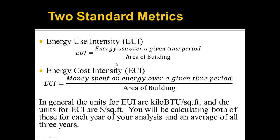The energy use intensity (EUI) can have different units, but basically it is the energy use over a given time period divided by the area of the building. Dividing by the area means we get something per square foot, so we can compare buildings of different sizes. If we didn't divide by square footage and just used energy use over a given time period, we really couldn't compare two different buildings of different sizes. It's the same thing with the energy cost intensity — the money spent on energy over a given time period divided by the area of the building.